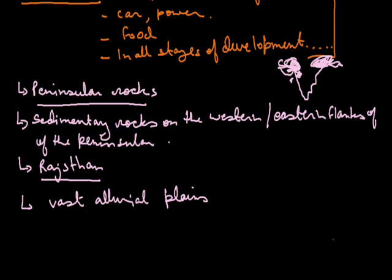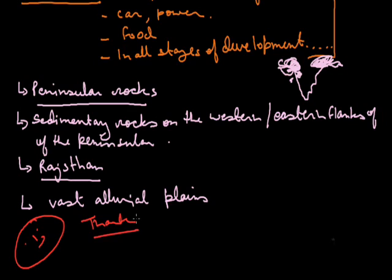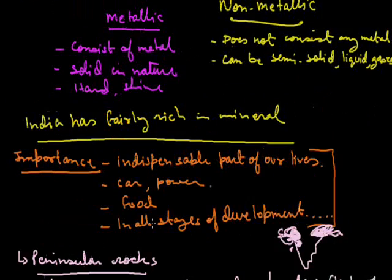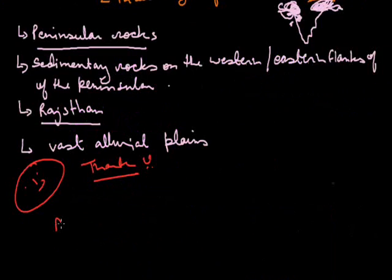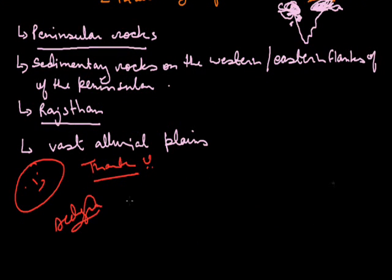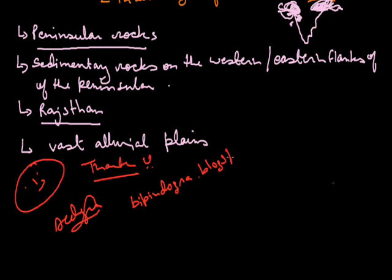Next we will cover the mode of occurrence of minerals, followed by individual types of minerals — examples of metallic minerals including ferrous and non-ferrous, non-metallic minerals, and energy minerals. If you have any problems or doubts, send a comment and I will reply, or visit my blog at www.blogspot.in. Thank you, students.